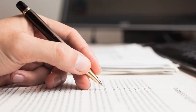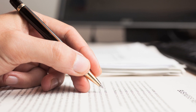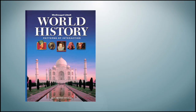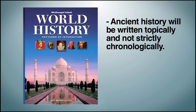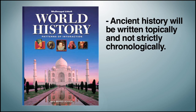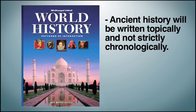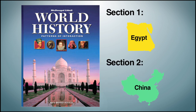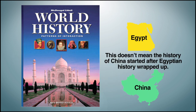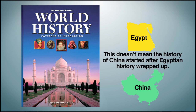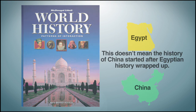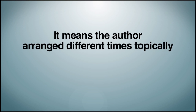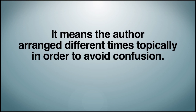But this does not even have to be the case by our own modern standards. In our own history textbooks, ancient history will often be written topically and not strictly chronologically. For example, we will often read a section about the entire history of Egypt, and then in the next section we will read about the history of China. But this does not mean the history of China started after the history of Egypt wrapped up — it means the author arranged different times topically in order to avoid confusion.